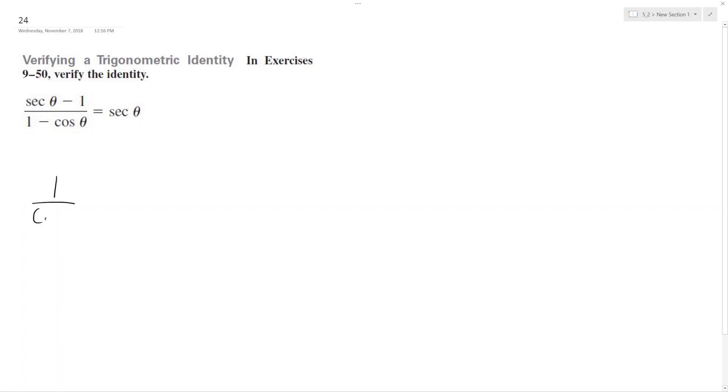So secant is the same thing as 1 over cosine theta minus 1. And then what I'm going to do here is I'm going to take the conjugate.